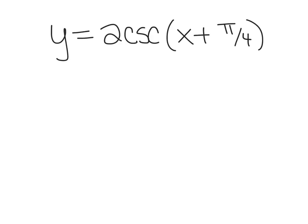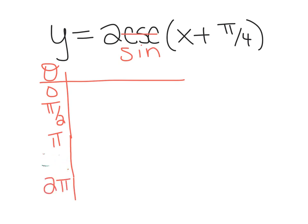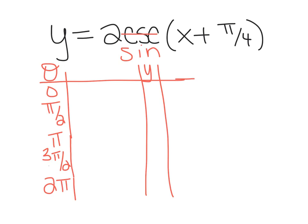On the bottom of page 261, it says sketch a graph of 2·cosecant(x + π/4). What we're going to do is pretend for a second that this says sine, and we're going to make a sine table like we used to. So we have θ values: 0, π/2, π, 3π/2, and 2π. The y-values for sine would be 0, 1, 0, negative 1, 0.